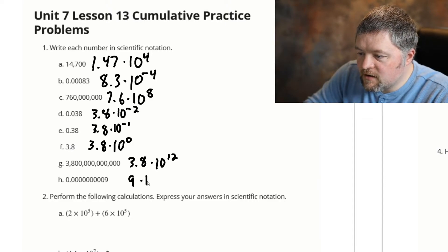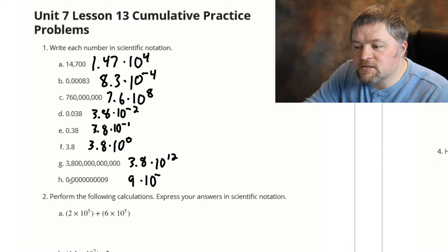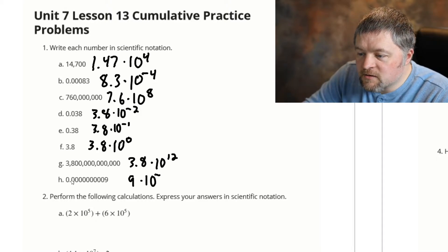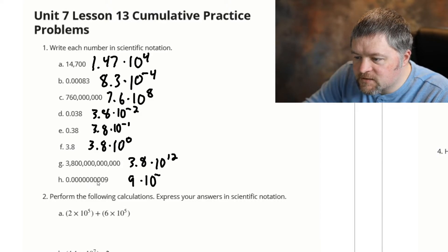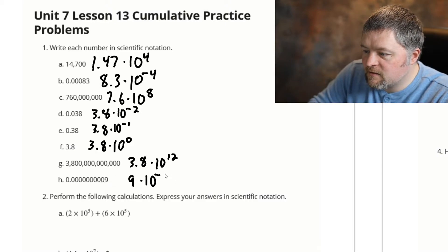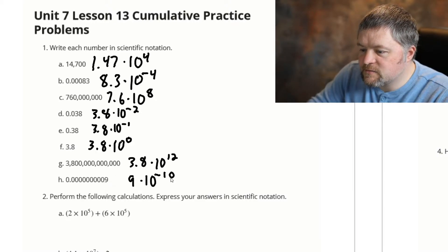9 times 10 to the power of — going to be negative because this is a small number, it's less than one. How many spots are we moving the decimal point? One, two, three, four, five, six, seven, eight, nine, ten. Nine times 10 to the negative ten.